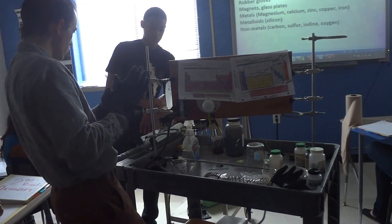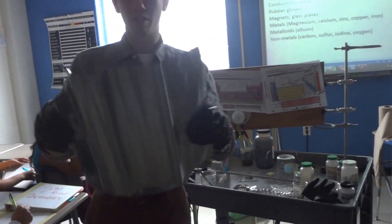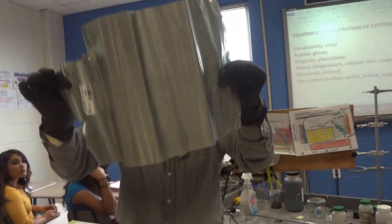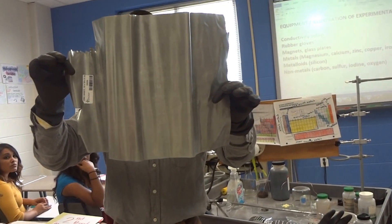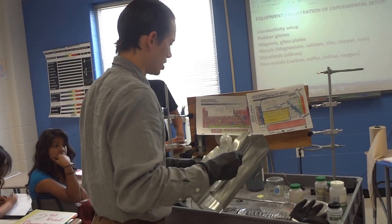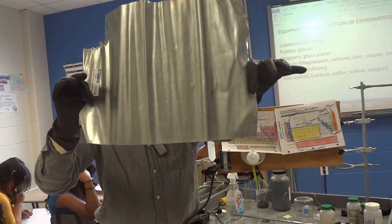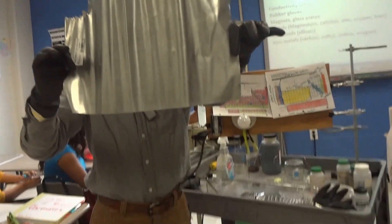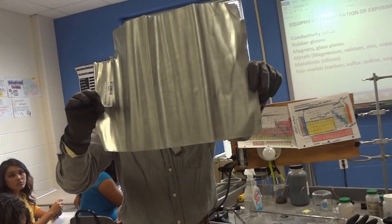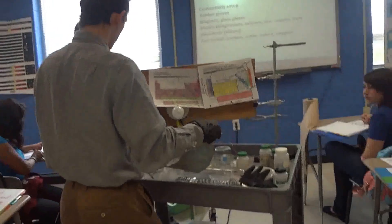The next metal we want to test is zinc. Zinc is very malleable — you can bend it very easily. It's shiny, it has luster, and it is probably ductile as well. Is this an alkaline earth metal or a transition metal? Zinc is in group 12, so it's a transition metal.